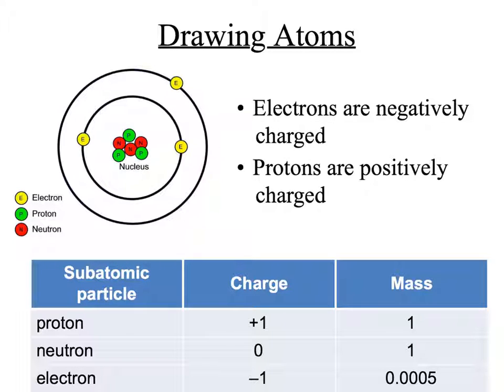The neutron has zero charge and a relative atomic mass of 1. The proton has a +1 charge and a mass of 1. The electron has a -1 charge and we call its mass negligible. It's not quite zero, but it's not big enough to affect the overall mass of the atom.